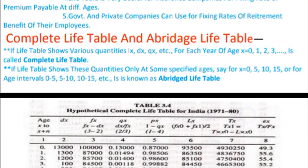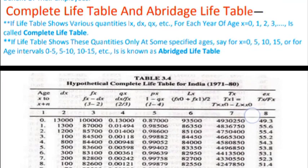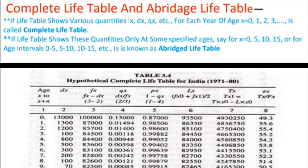Next, the complete life table and the abridged life table. If the life table shows various quantities — lx, dx, qx, etc. — for each year of age, that is x = 0, 1, 2, 3 ... n, it is called the complete life table. If it shows these quantities only at some specified intervals, say x = 0, 5, 10, 15 at 5-year intervals, it is known as the abridged life table.